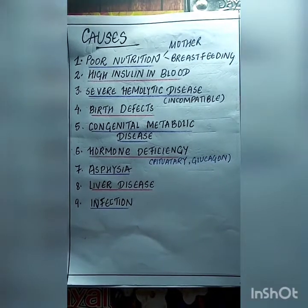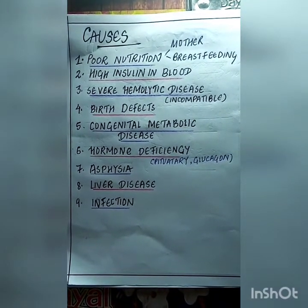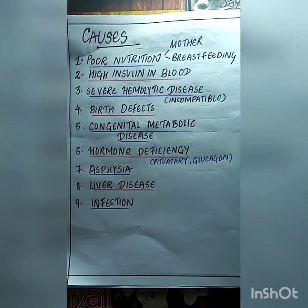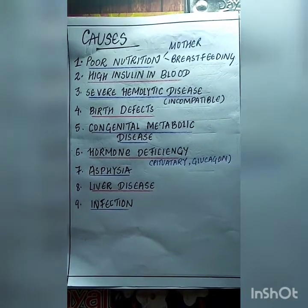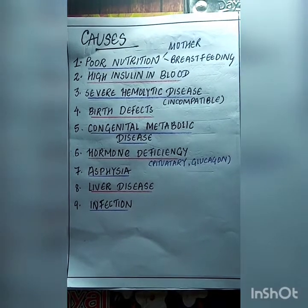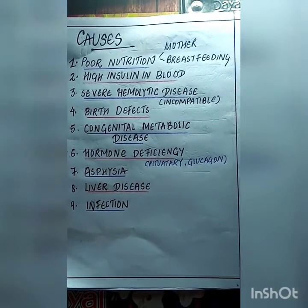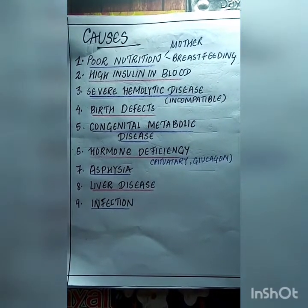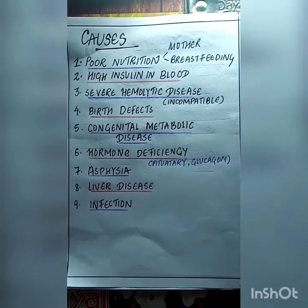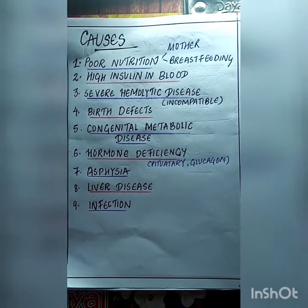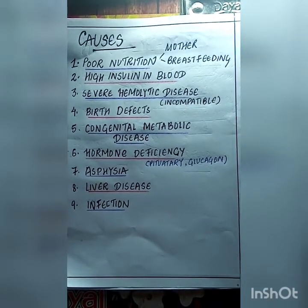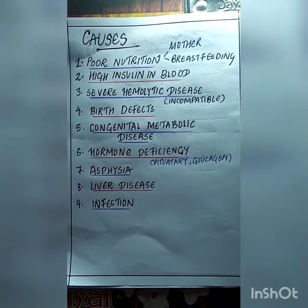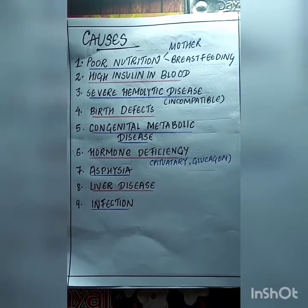Second, high insulin in the blood. If the mother is having gestational diabetes mellitus during pregnancy, there will be a high insulin level in the child. Other causes include severe hemolytic diseases such as incompatible blood types, birth defects, congenital metabolic diseases, hormone deficiencies like deficiency of pituitary hormones and glucagon, asphyxia, liver diseases, and infection in the child.